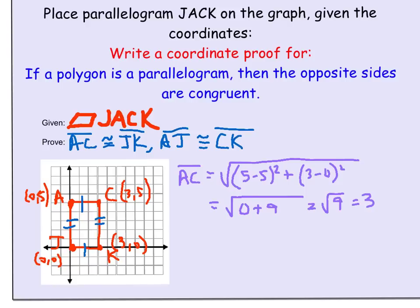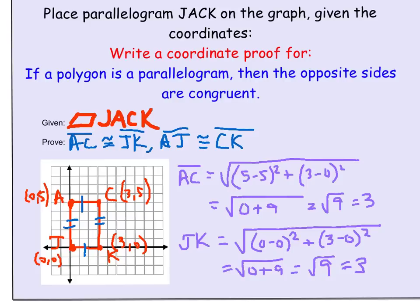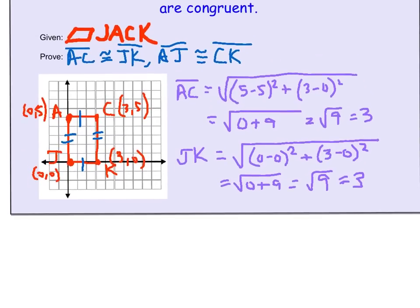Now we'll do JK and see if we get 3. After doing the distance formula again, sure enough, we get 3. So we've proven that AC and JK are congruent.